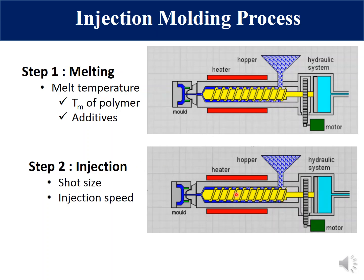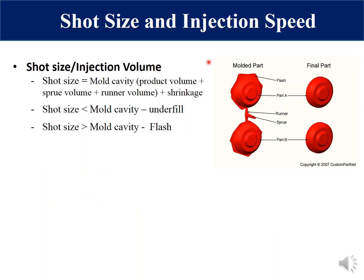The second step is injection. In this step, the screw moves forward and injects polymer inside the mold cavity. The key questions are: how much polymer needs to be injected, and how fast. The two important parameters are shot size — also called injection volume — and injection speed. When polymer gets injected into the mold, it needs to fill the whole mold cavity, including sprue volume, runner volume, and product volume.